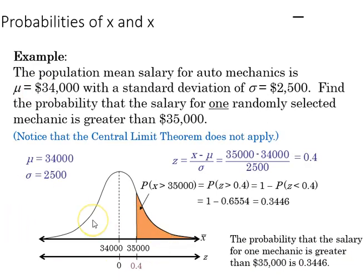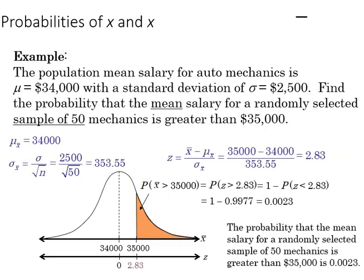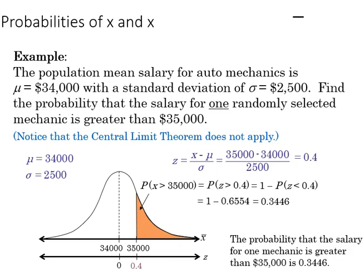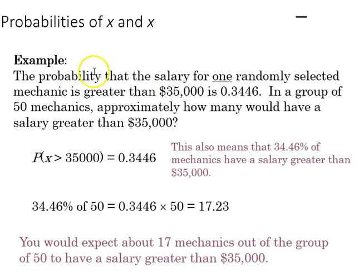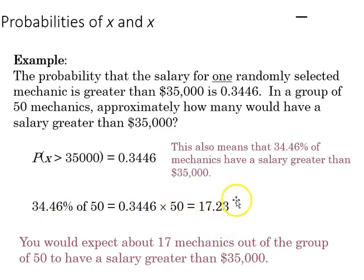Taking that same example but replacing the 50 mechanics with just one individual, we get a very different result: 0.3446 — about a one in three chance instead of the extremely unlikely 0.23 percent. We can also ask: in a group of 50 mechanics, how many would have a salary greater than $35,000? The probability of an individual earning more than $35,000 is 0.3446, and 34.46 percent of 50 is 17.23. Rounding off, we expect about 17 mechanics.